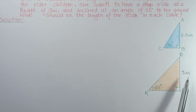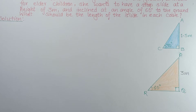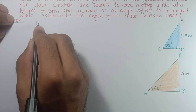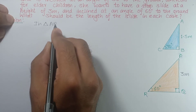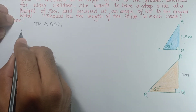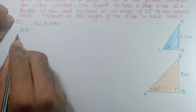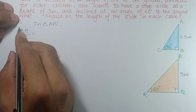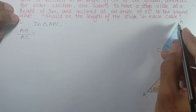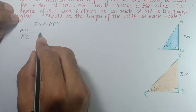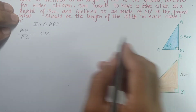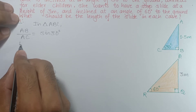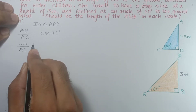sin 60° equals perpendicular upon hypotenuse. In triangle ABC, AB upon AC equals perpendicular upon hypotenuse. Perpendicular is AB and hypotenuse is AC, which equals sin of the angle. So sin 30° — write 30 degrees. The value of AB is given as 1.5 meters, and AC is what we are trying to find.